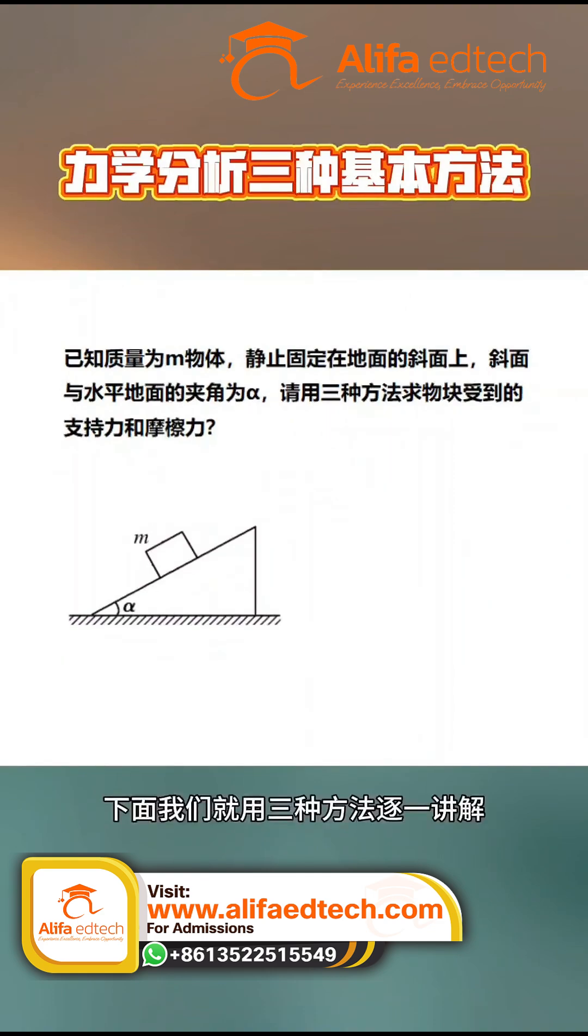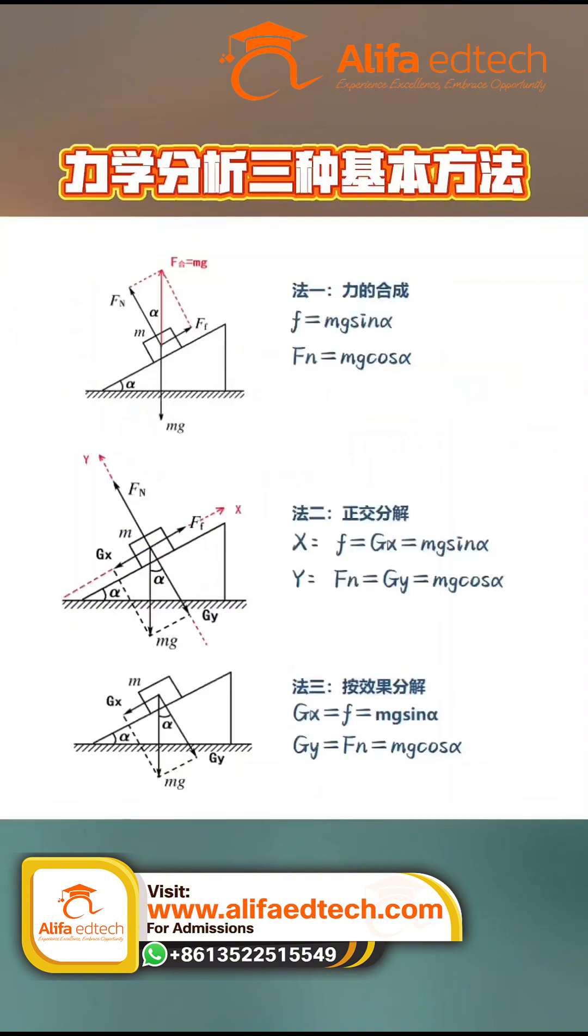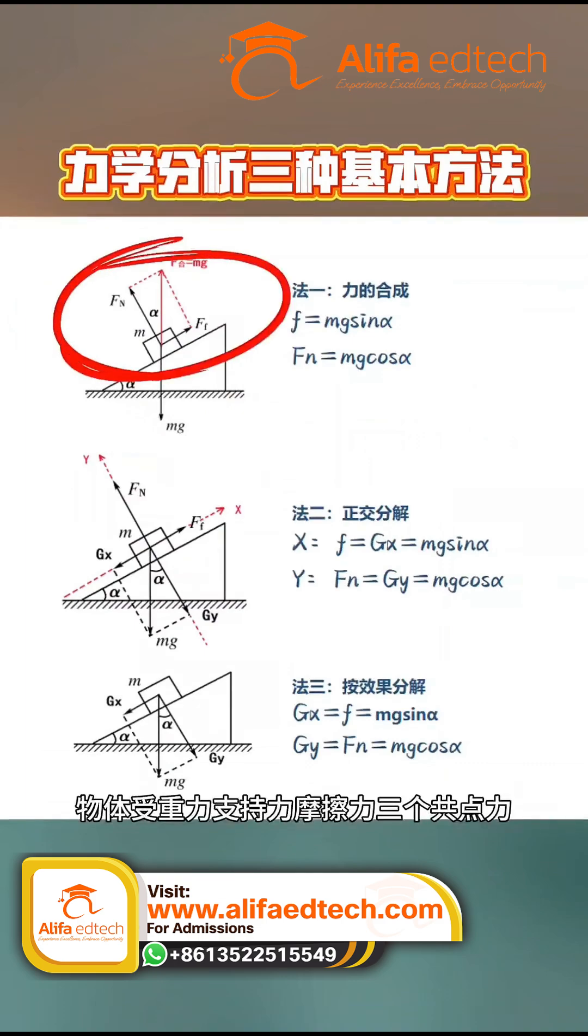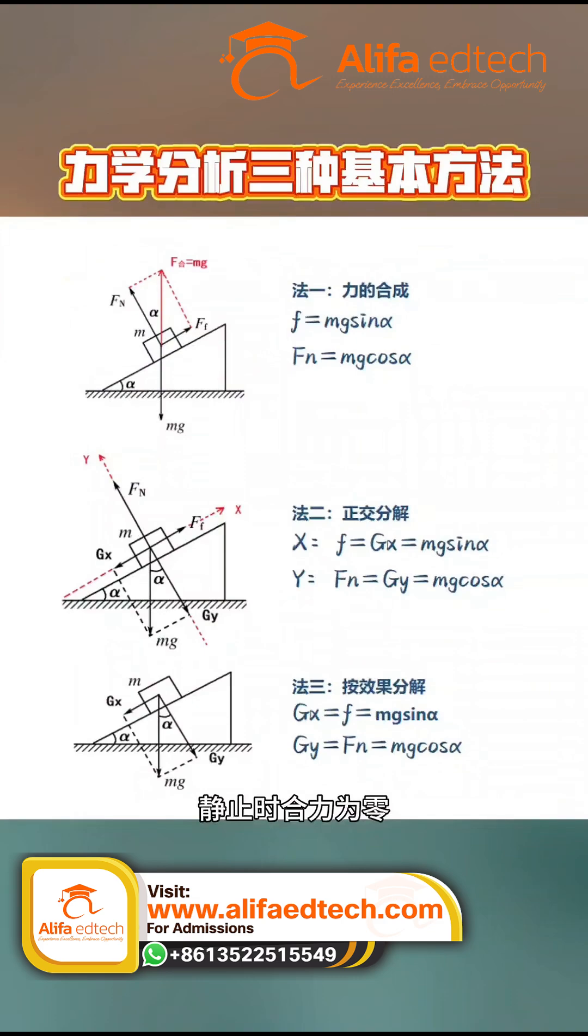Now let's go through the three methods one by one. The first method is the force composition method. The object is subject to three concurrent forces: gravity, the support force, and the friction force. When at rest, the net force is zero. The resultant of any two forces is equal in magnitude and opposite in direction to the third force.